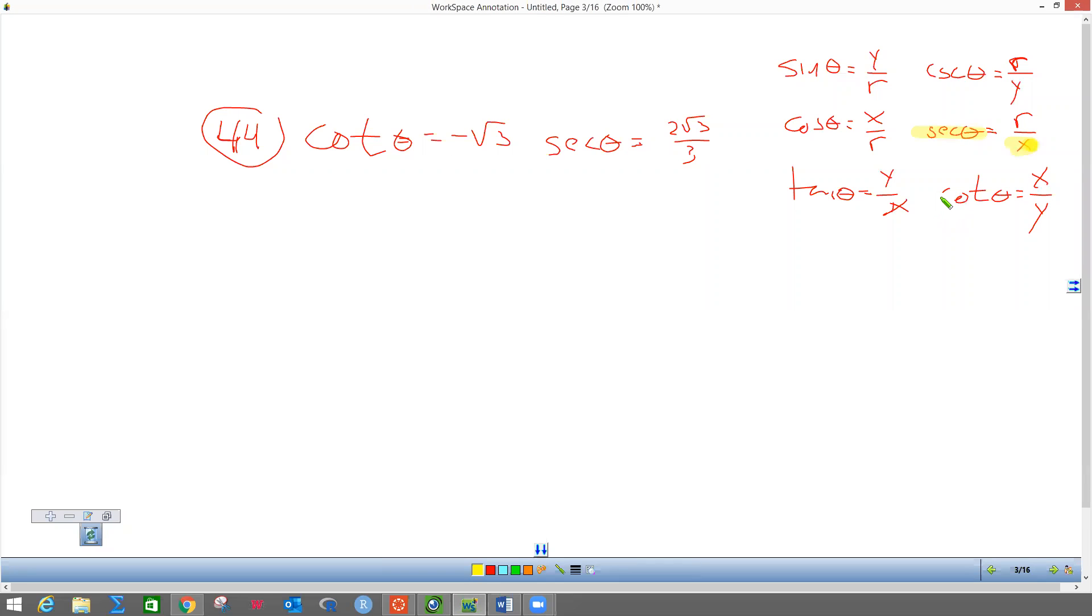Cotangent is X over Y, so I've got to use that information. This X over Y tells me it's going to be negative because of that negative. Secant is X, so this tells me X is going to be positive. Whatever this X is here has to be the same as that X.